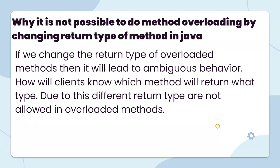Why is it not possible to do method overloading by changing the return type of a method in Java? If we change the return type of a method, it will lead to ambiguous behavior. How will the client know which method will return what type? Due to this, different return types are not allowed in overloaded methods.